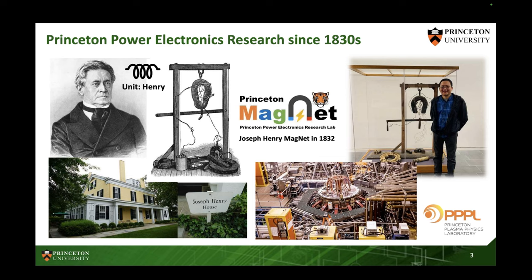I usually make a joke — I'm not the first power electronics professor at Princeton. The first one is actually Joseph Henry, who put his name under the inductor unit, Henry. This is Joseph Henry's magnetics; the real one is actually right now in Princeton's physics department and I recently found it. That's sort of why we came up with the name of the Princeton Magnet Project, which I'm going to talk about. Princeton University is also managing the Princeton Plasma Physics research lab, using magnetics to constrain the plasma — that's also how Princeton is generally tied with energy research, and my group is doing power electronics here.